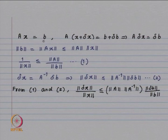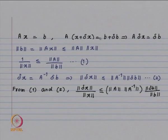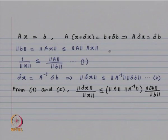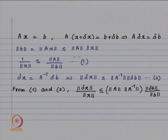Let us derive the formula ‖δx‖/‖x‖ ≤ ‖A‖·‖A⁻¹‖·(‖δb‖/‖b‖). We have Ax = b, and A(x + δx) = b + δb. Using Ax = b, we get A·δx = δb. Now look at ‖b‖ = ‖Ax‖ ≤ ‖A‖·‖x‖ — here I use the fact that we are using the induced matrix norm, which gives us this fundamental inequality. From here, you get 1/‖x‖ ≤ ‖A‖/‖b‖.